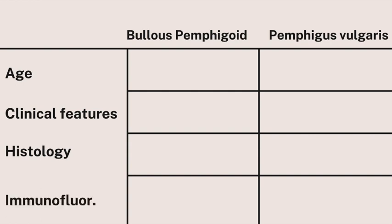For patients with bullous pemphigoid, they are usually older than 60 years old, while for pemphigus vulgaris, their age range is between 40 to 60 years old. I'm just providing you with an overview of the big differences so that you can easily identify the diagnosis on exam day.